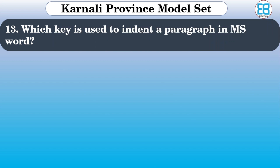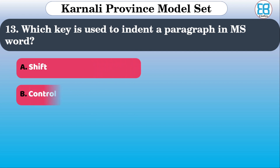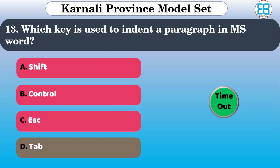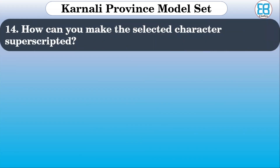Which key is used to indent a paragraph in MS Word? The options are: Shift, Control, yes, Tab. The correct option is Tab.